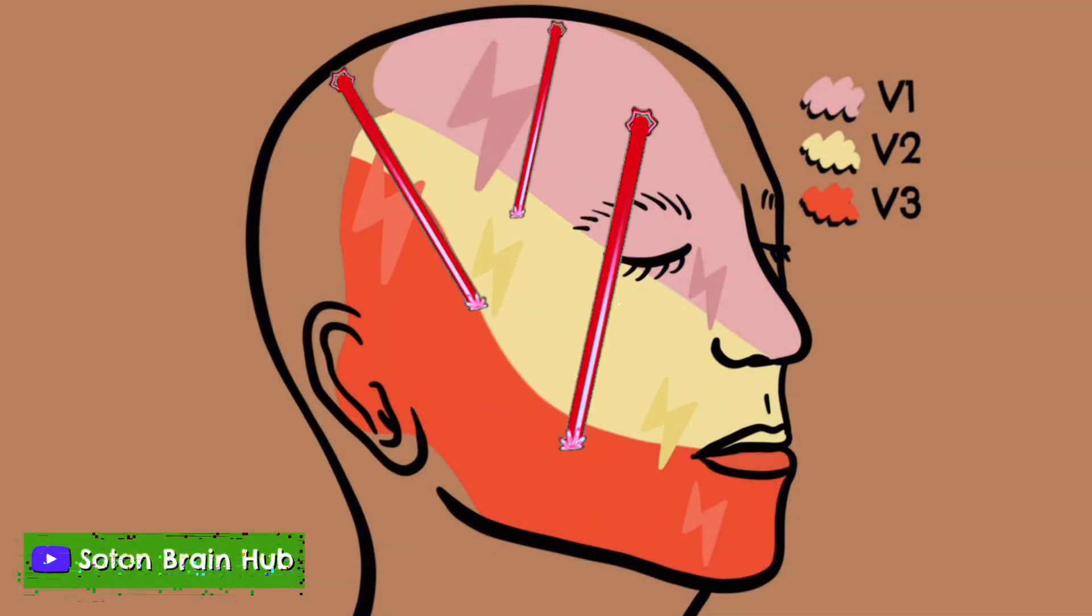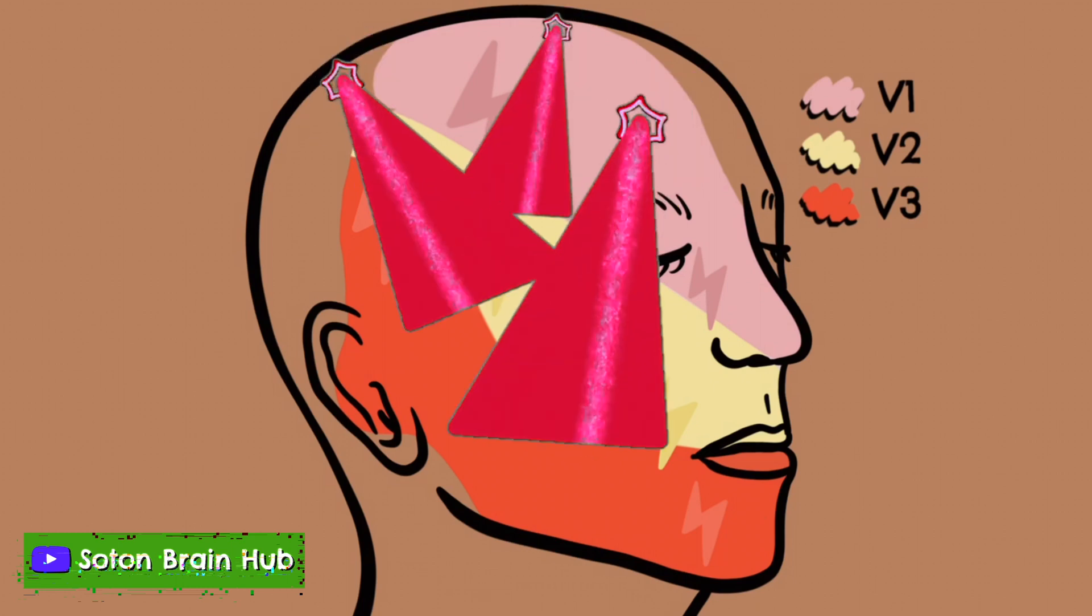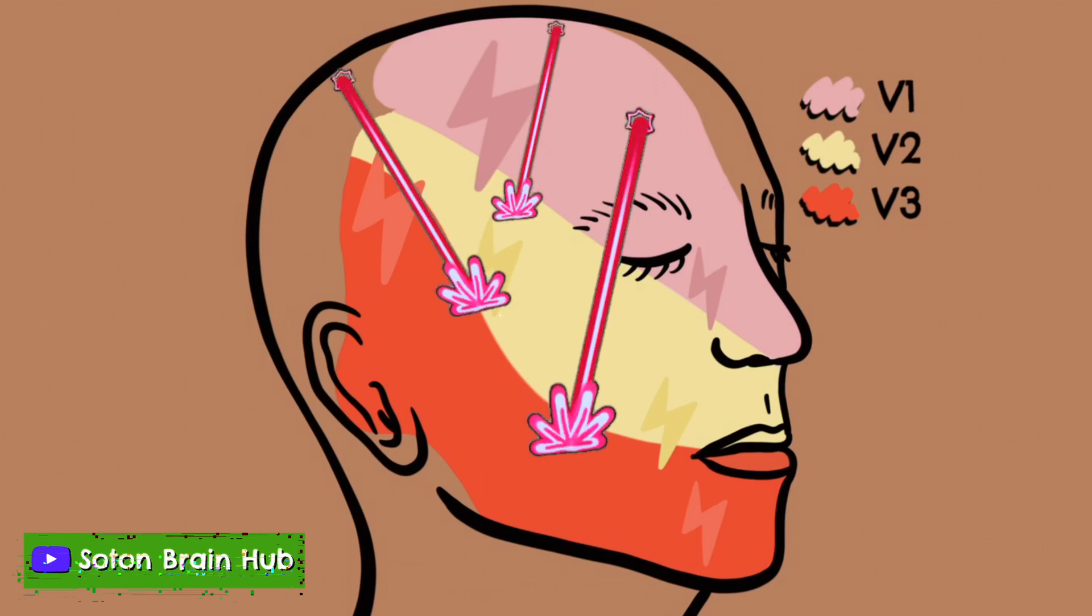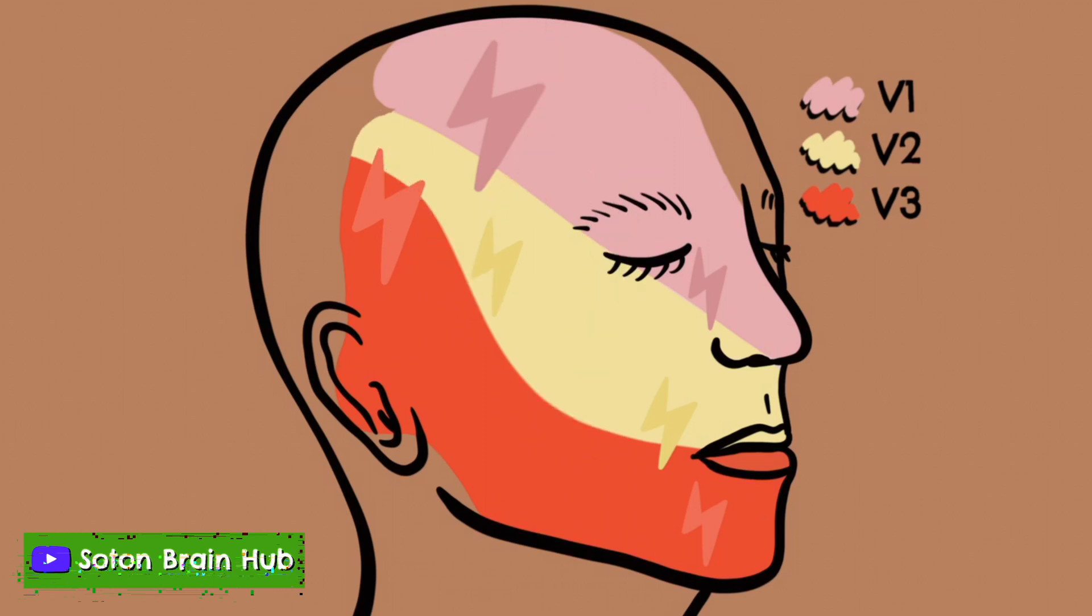The International Headache Society has published strict criteria for diagnosis. A. Paroxysmal attacks of pain lasting from a fraction of a second to two minutes, affecting one or more divisions of the trigeminal nerve and fulfilling criteria B and C.